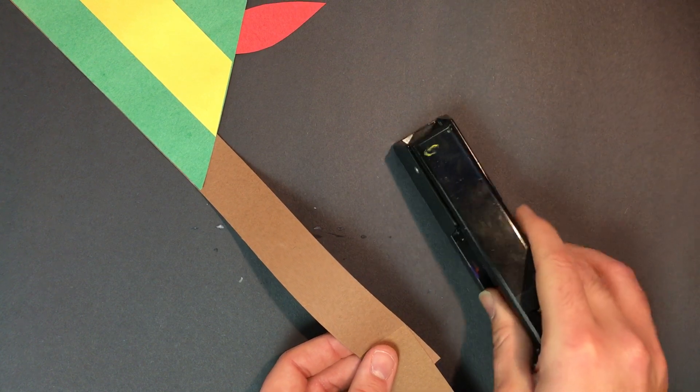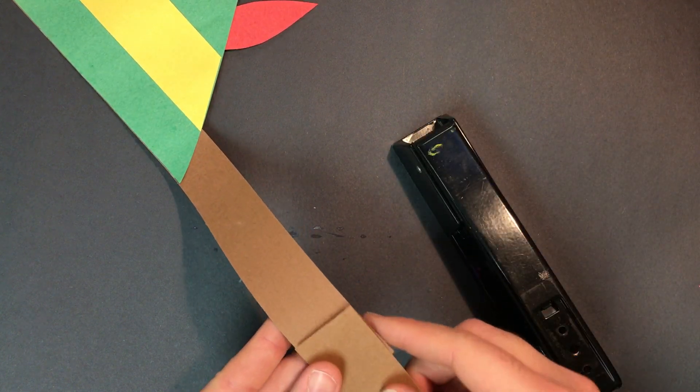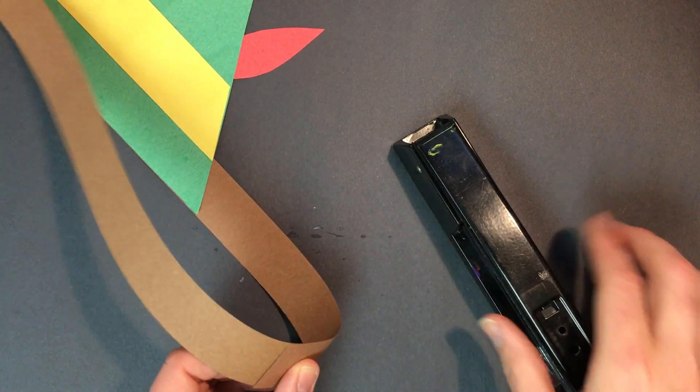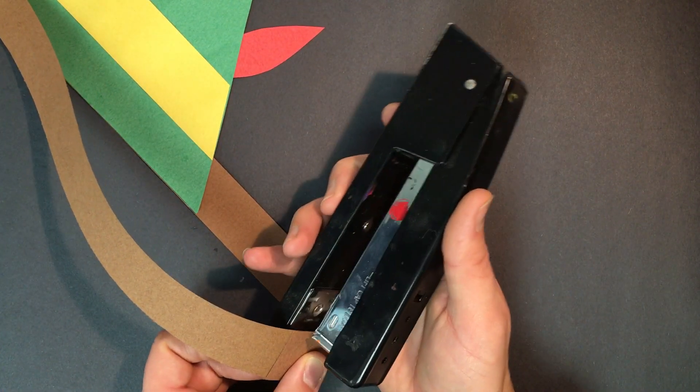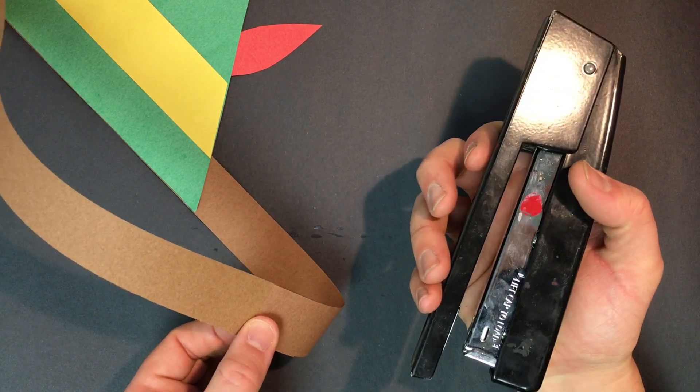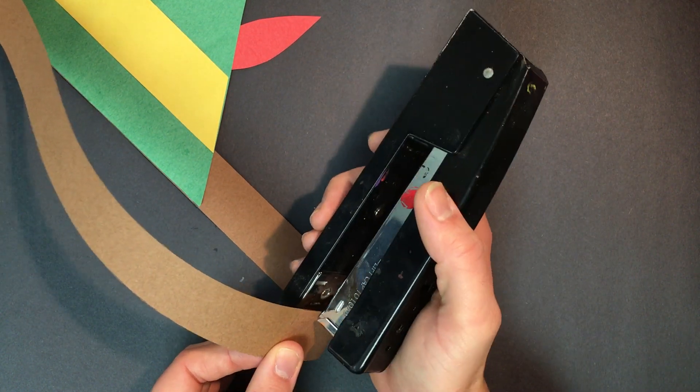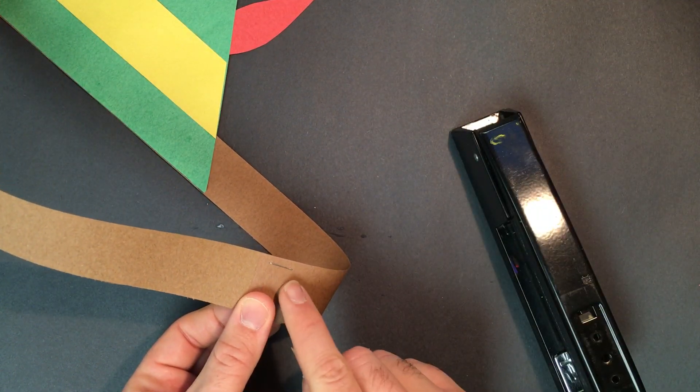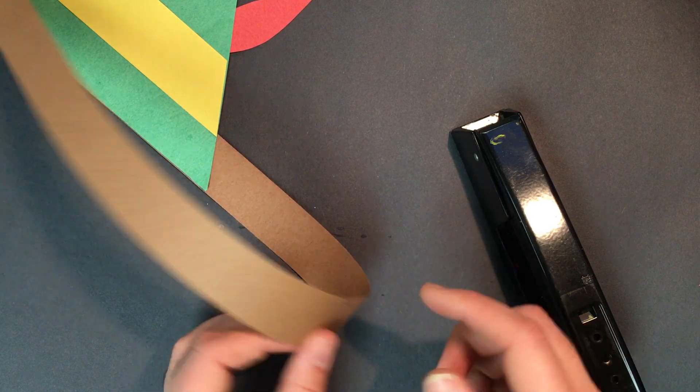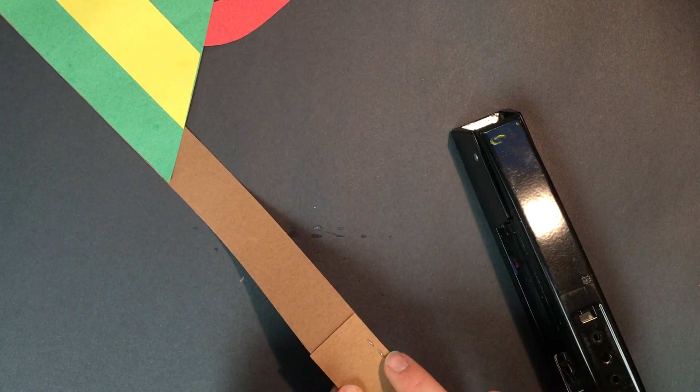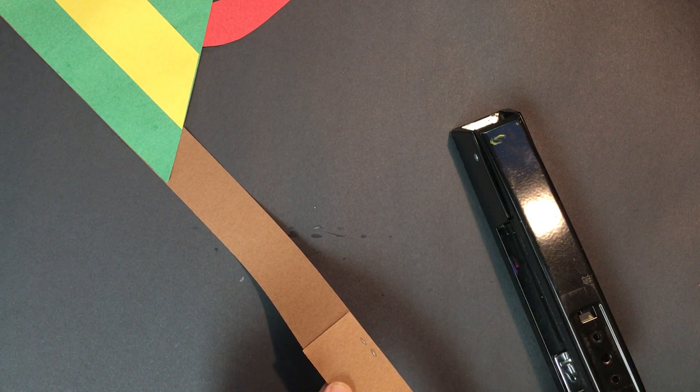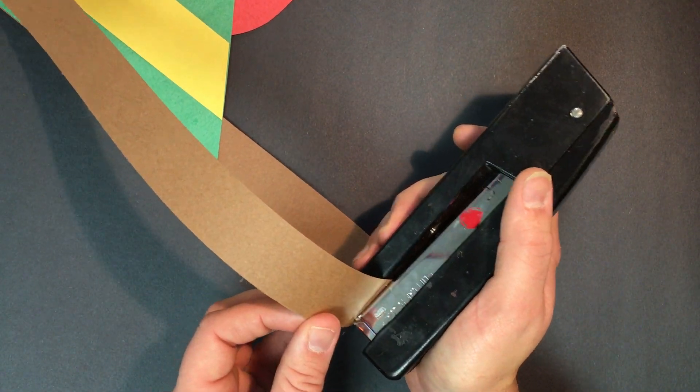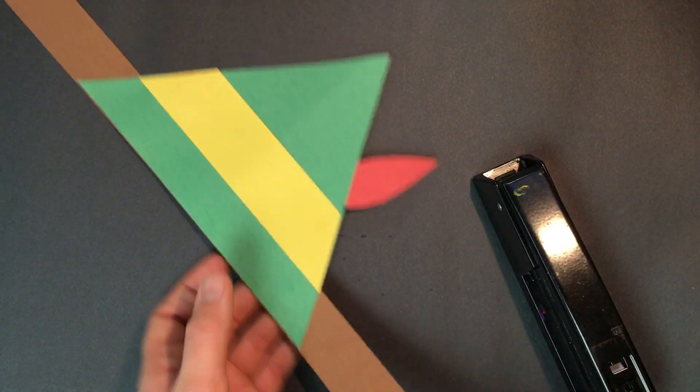Now, you don't want the pokey part of the staple irritating the student's head. You want the soft part to be on that side. So what we're gonna do is we're gonna go this way. You want the long part facing the forehead, if that makes sense. So you want that long part on the skin contact. You do not want this pokey part on the skin contact. Okay, so make sure that you do that correctly. And you want two staples. Okay? There we go.